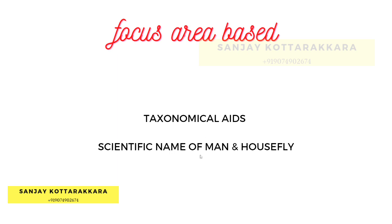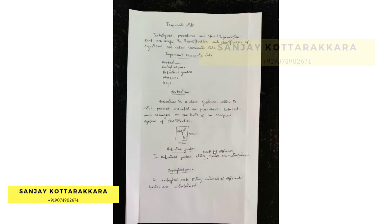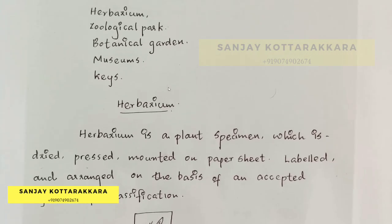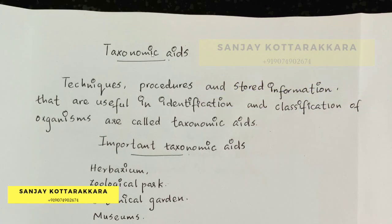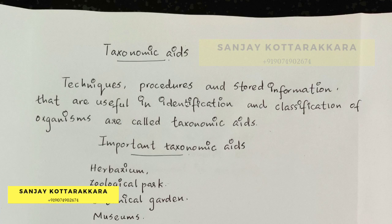This is the scientific name of man and housefly. Housefly is called Musca domestica. The scientific name of man is Homo sapiens. Our first topic is taxonomical aids. What are taxonomical aids? They are techniques and procedures. Some stored information is called taxonomical aids. We can use it to identify and classify an organism.